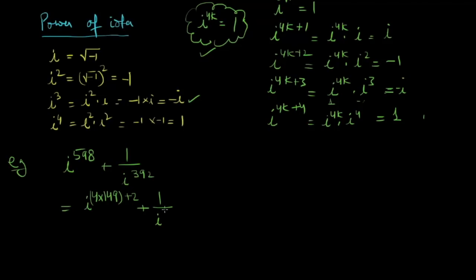4 times 98 is 392. iota to the power 4 into 149 into iota square plus 1 upon iota to the power 4 into 98.